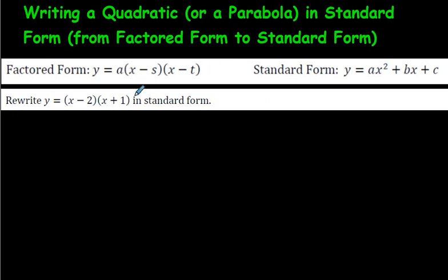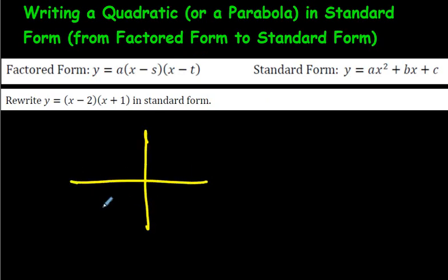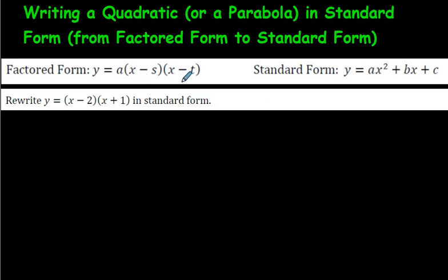We'll start by looking at factored form — it looks like y = a(x - s)(x - t). If you're already familiar with this, s and t will be our x-intercepts, or what we call our zeros of the parabola — the place where the parabola cuts through the x-axis. These are called zeros or x-intercepts; some people call them roots as well, but zeros is the most common term.